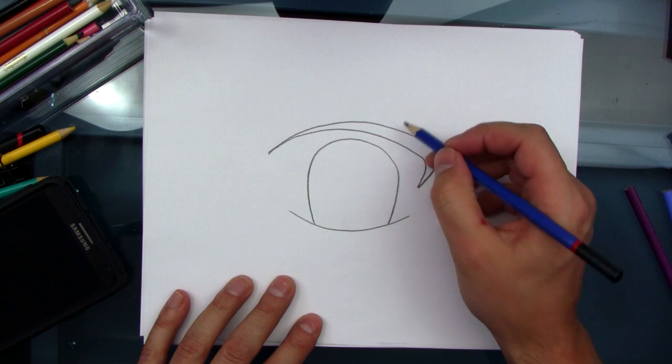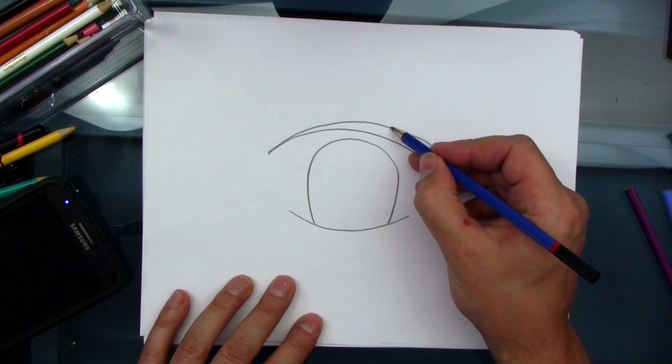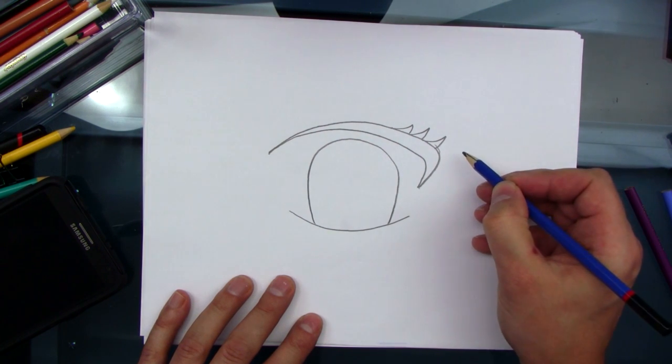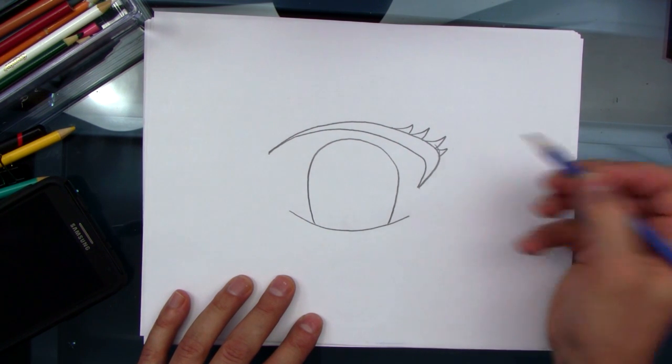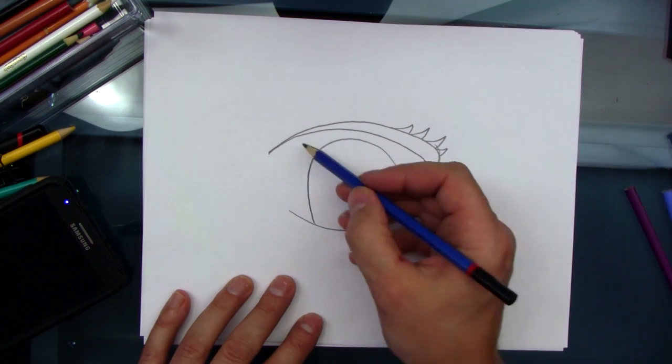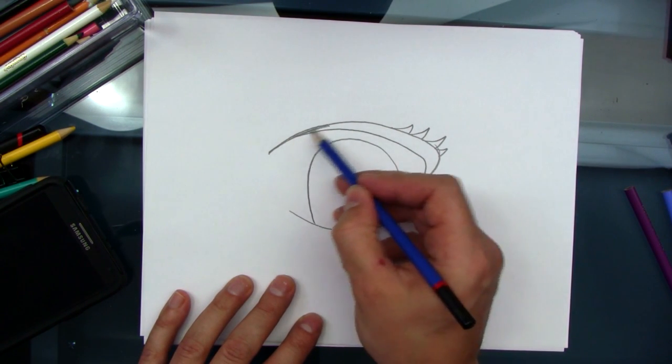Now we're gonna draw little eyelashes on this eye. So, shloop. Shloop. Shloop. Shloop. And one more for good luck. Shloop. There. That's pretty good. So, now we're gonna color this in, because it's a dark eyebrow.